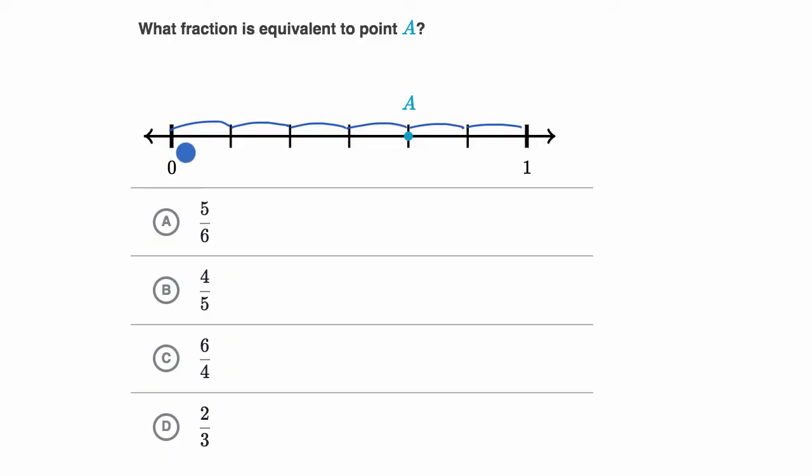So going from zero, one jump will get us to one sixth, then two sixths, then three sixths, then four sixths, then five sixths.